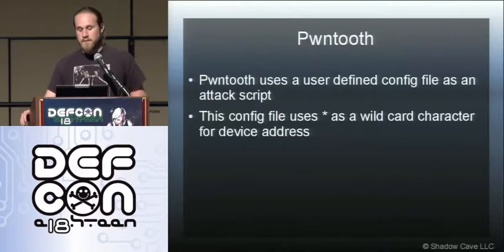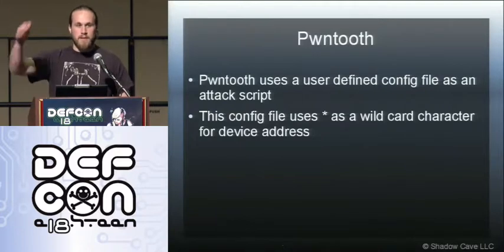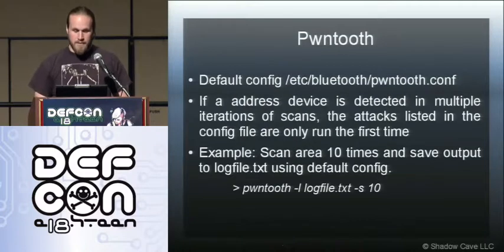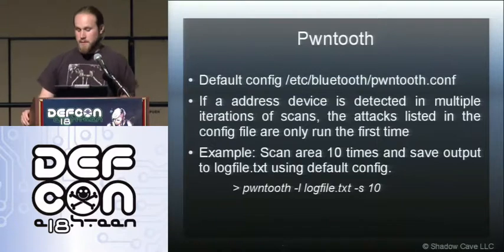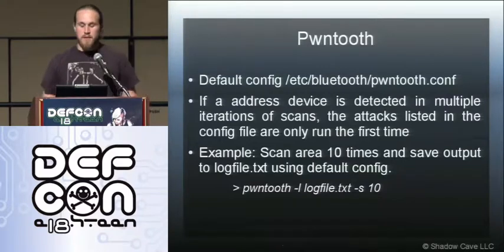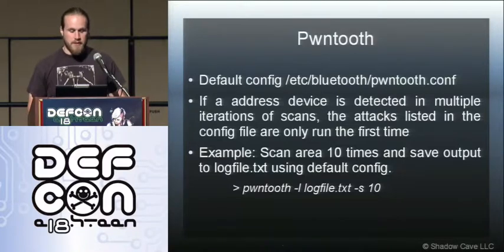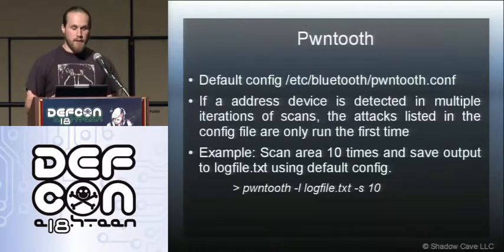Here's the config file. The configuration file uses a star as a wildcard — that's where it inserts the MAC address. So a lot of the commands will show where the MAC address should be. Other than that, it could just be a bash script except that it scans and only runs each attack once. This is the default installation area. You can run it multiple times and specify a different configuration file. This just makes your life easier if you're going to be running lots of attacks against a single device or an area of devices while pen testing.